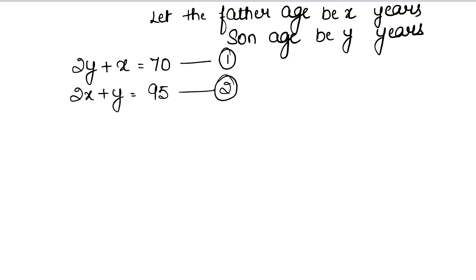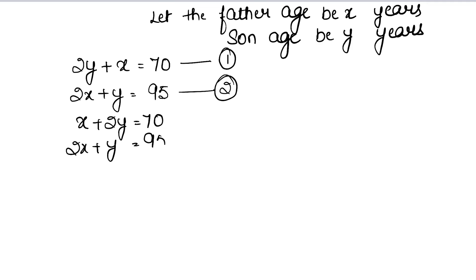So we can write: first equation as x + 2y = 70, and second equation as 2x + y = 95.